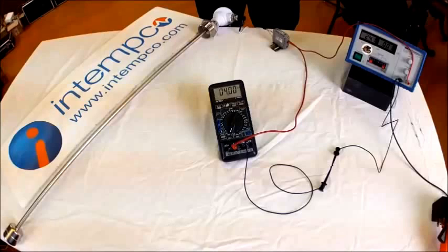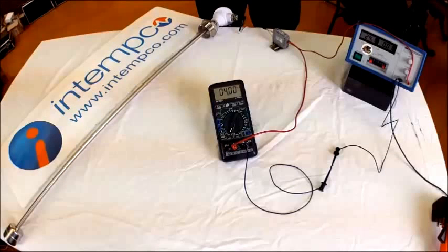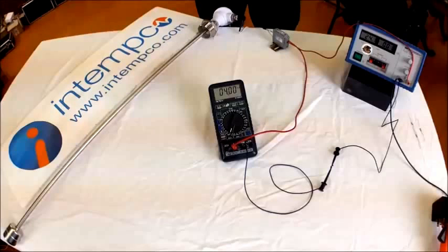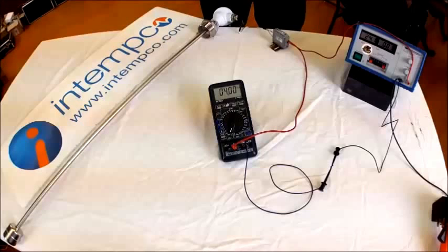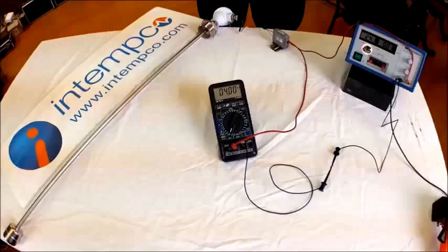For the purpose of this demonstration, we will be using an Intemco float level sensor. This sensor changes resistance with a change in float position. Attached to the sensor head is a transmitter that converts that resistance into a 4 to 20 milliamp current signal.